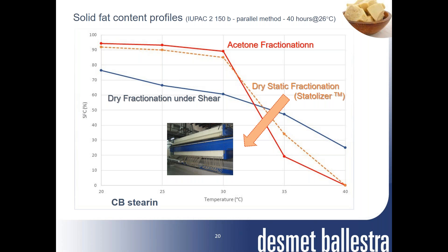Mr. Food asks what the previous method for making cocoa butter substitute was and what the advantage of using the static crystallizer technology is. The previous methods were mostly solvent fractionation, and in dry fractionation it was a panning and pressing technology, which is now being abandoned due to high labor and energy consumption. The static crystallizer technology is a highly optimized version of that panning and pressing technology.